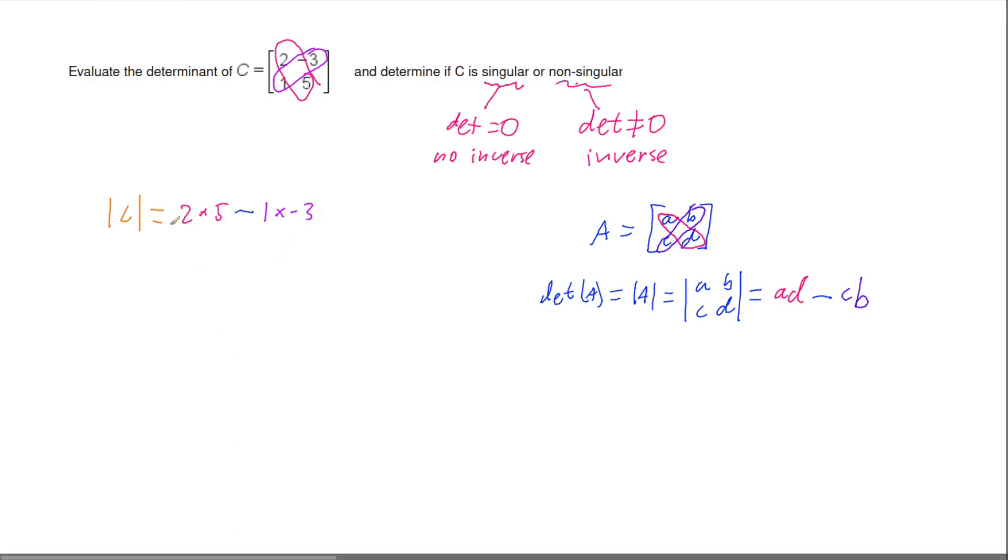So if we go and work these out, 2 times 5 is 10, and then we're going to minus off 1 times negative 3, which is negative 3. So that means that our determinant of C is 10 take negative 3, which is the same as 10 plus 3. So it's 13.